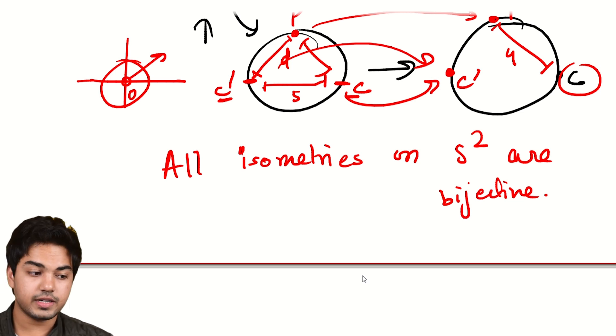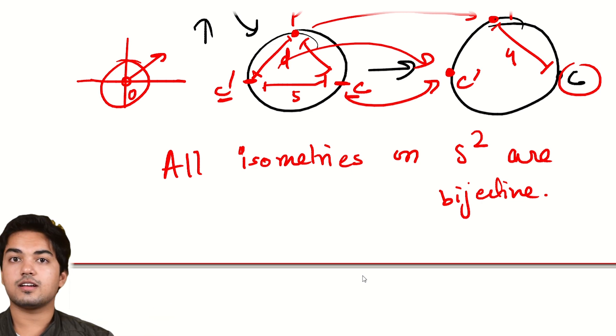I urge you to look up what those are, but yeah. So you can even classify all the isometries on a plane. Why don't you try classifying all the isometries on the sphere? Can't be too hard.